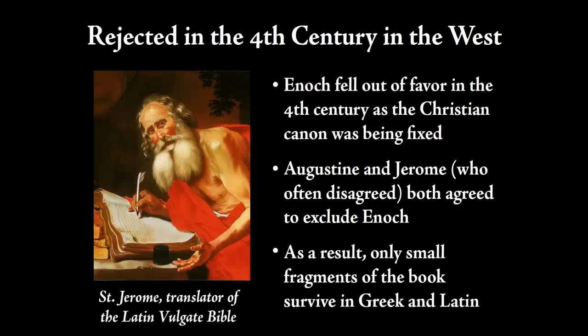However, by the time we get to the fourth century — when Christianity became the state religion of the Roman Empire and they were getting down to formulating creeds and deciding on the canon — Enoch started to fall out of favor. Both Augustine and Jerome, who tended to disagree on many things, agreed that Enoch didn't make their grade. Since Jerome was preparing the great Latin translation and Augustine was preparing the canon list, Enoch ultimately didn't make it into the canon.